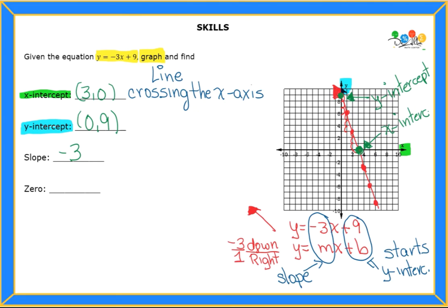How about zero? So the zero is the same as x-intercept. The only difference is that we are not going to write down the whole coordinates. We're going to focus only on the x-coordinate. So the x-coordinate is 3. Therefore, my answer will be x equals positive 3.